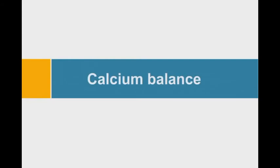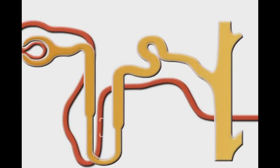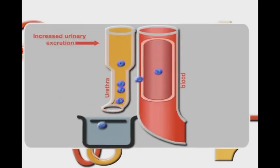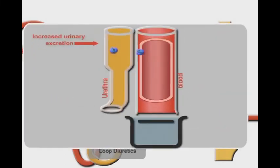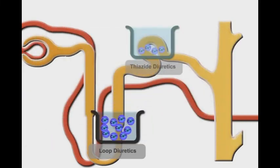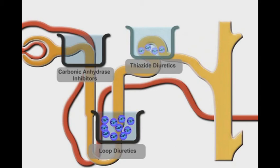Calcium balance is an important comparison factor between loop diuretics and thiazide diuretics. Loop diuretics enhance calcium excretion and might induce hypercalciuria. By contrast, thiazide diuretics potentiate calcium reabsorption from the nephrons into the blood. The other two groups have no significant effects on calcium balance.